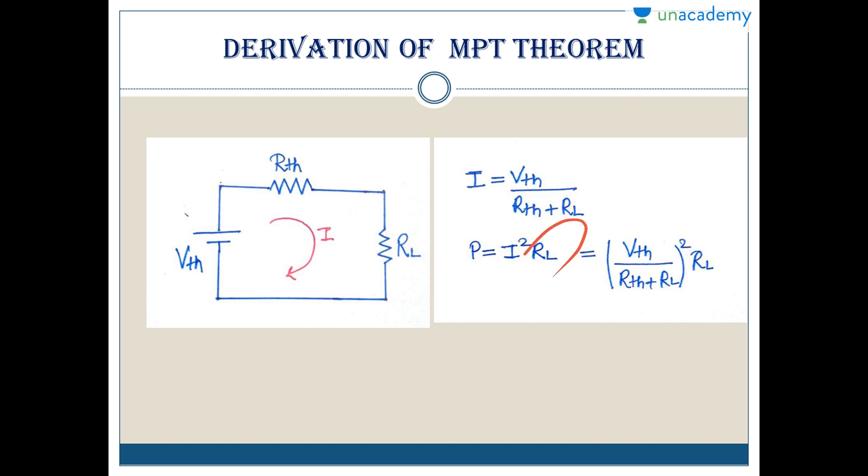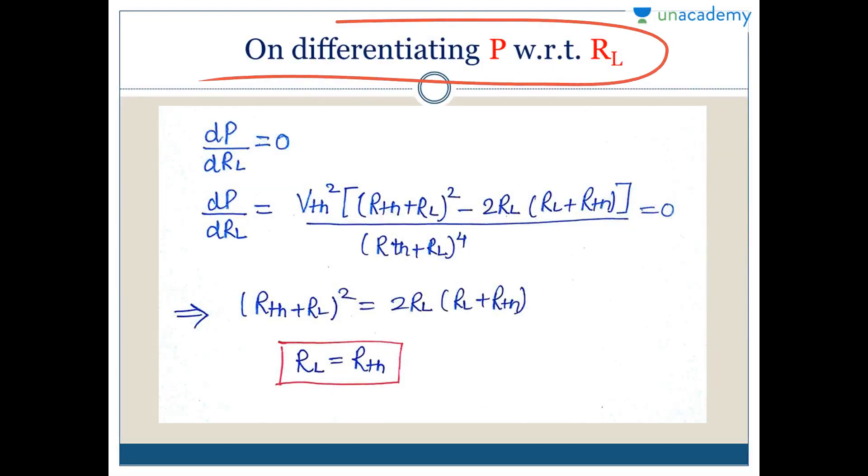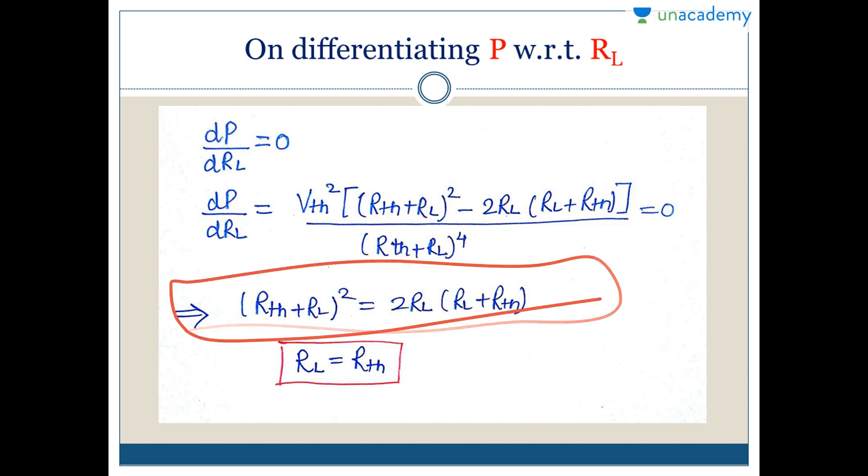On differentiating power with respect to RL and equating to zero, you will get: VTH squared times bracket RTH plus RL square minus 2RL times bracket RL plus RTH, divided by RTH plus RL to the power 4, equals zero. On solving, you can cancel terms and move them around.